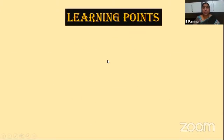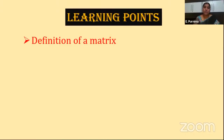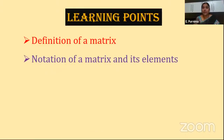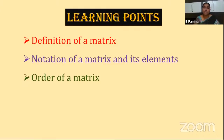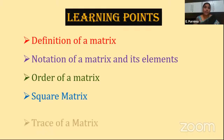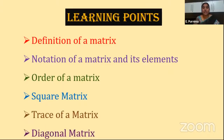In today's class, what you are going to learn: we will see the definition of a matrix - what a matrix actually means, how a matrix is written (notation of a matrix and its elements). Next is the order of a matrix. Next are types of matrices - among the many types, we will see square matrix, trace of a matrix, and diagonal matrix. These are the points we are going to learn in today's session.